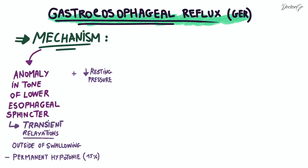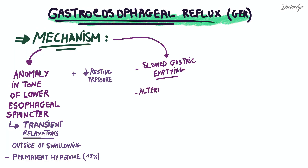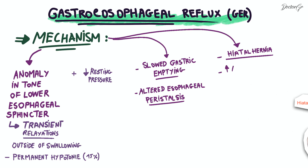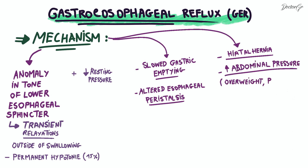Additionally, other mechanisms can contribute to GER, such as slowed gastric emptying or an altered esophageal peristalsis, where peristalsis refers to a muscular contraction facilitating the movement of food inside the esophagus. The presence of a hiatal hernia is also a significant risk factor, as are other factors like increased abdominal pressure, which is common in overweight patients or pregnant women.